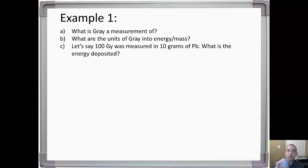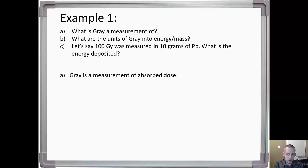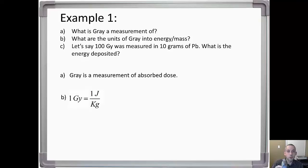Example one: what is gray a measurement of? Gray is a measurement of absorbed dose. This is a very important quantity in radiation physics primarily because it's a biologically relatable quantity — you can relate it to biological effects. The units of gray are energy over mass: one gray is equal to one joule per kilogram, one joule being a quantity of energy, kilogram being a quantity of mass.